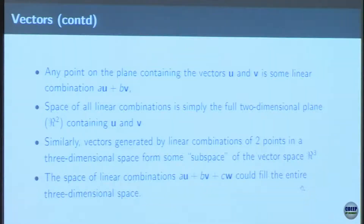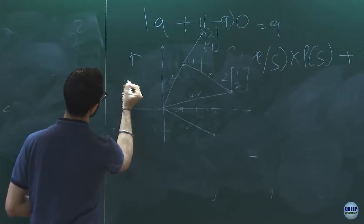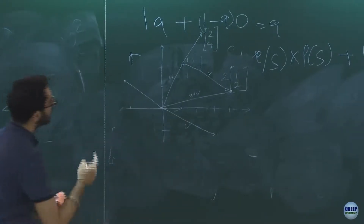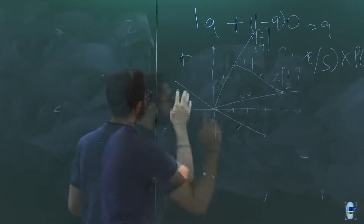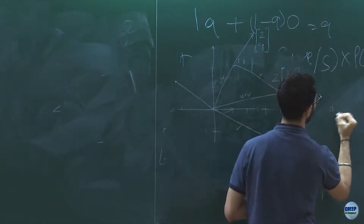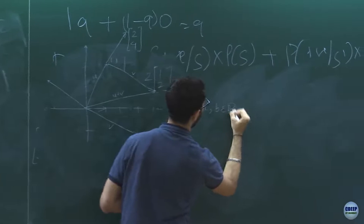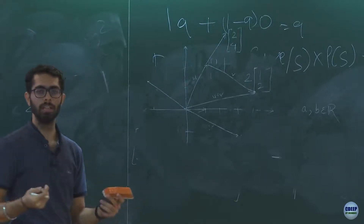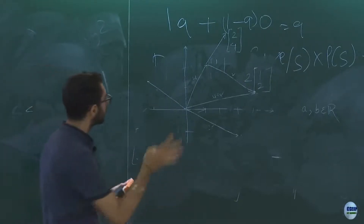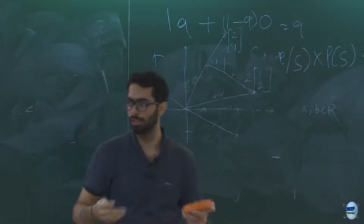Given any two vectors u and v, using the two operations of scalar multiplication and addition, what are all the vectors we can represent? The scalars a and b belong to the reals. Can we get to any vector using just these two vectors by scaling and adding them? What is the set of vectors we will be getting using only these two vectors?